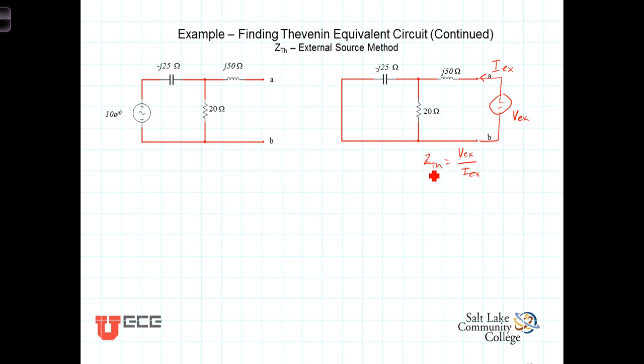So our Thevenin impedance will be, we're going to deactivate the independent sources. If there were dependent sources in here, we would leave them active. And having deactivated the independent sources, applying a voltage and taking the ratio of the voltage to the current.